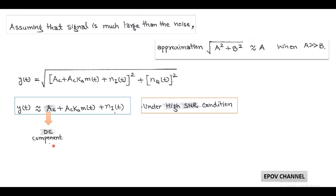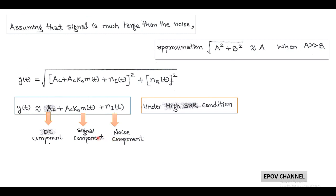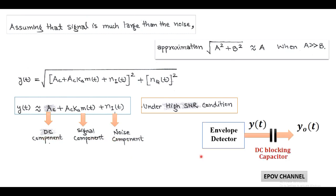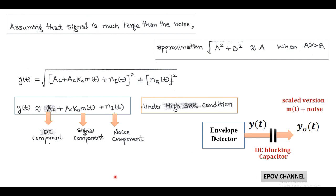Here, the first term is the DC component, the second term is the signal component, and the third term is the in-phase noise component. To find the post-detection SNR, we require the signal and noise components. The DC component is removed by the DC blocking capacitor, so the output of the blocking capacitor becomes AC·KA·m(t) + NI(t).